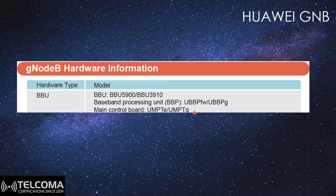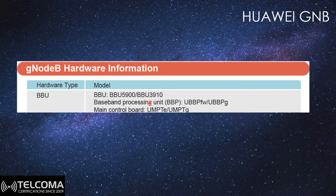From the UBBPG board, there are two variants: G2A and G3, with G3 being the most advanced one. This is the baseband processing capacity within the BBU. Then we have the transmission boards: UMTE and UMTG, with UMTG being more advanced than UMTE.